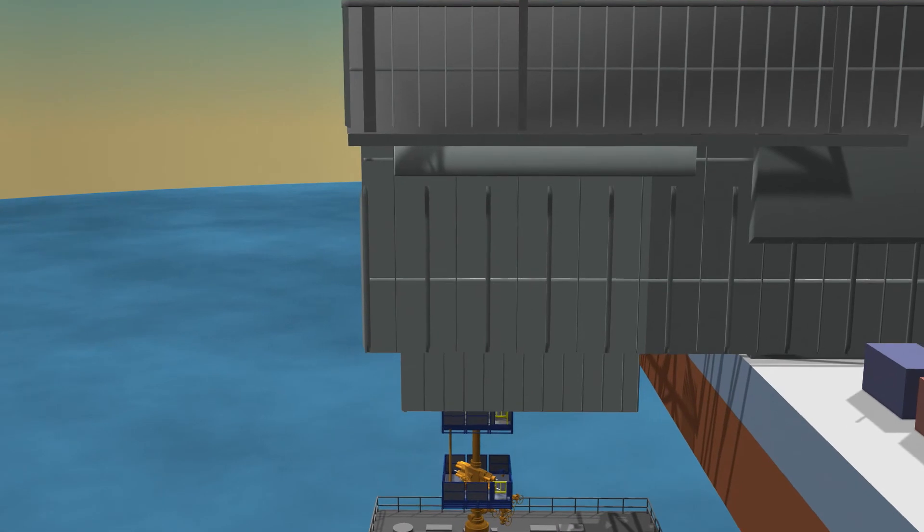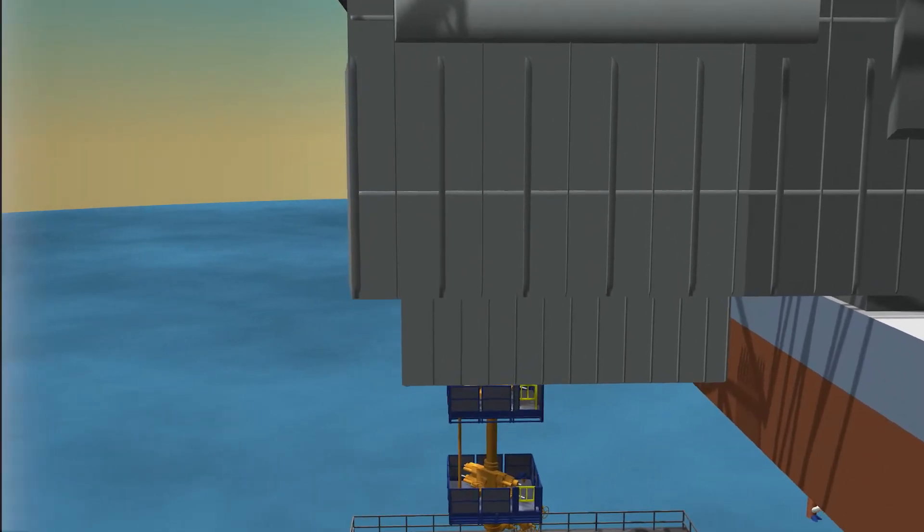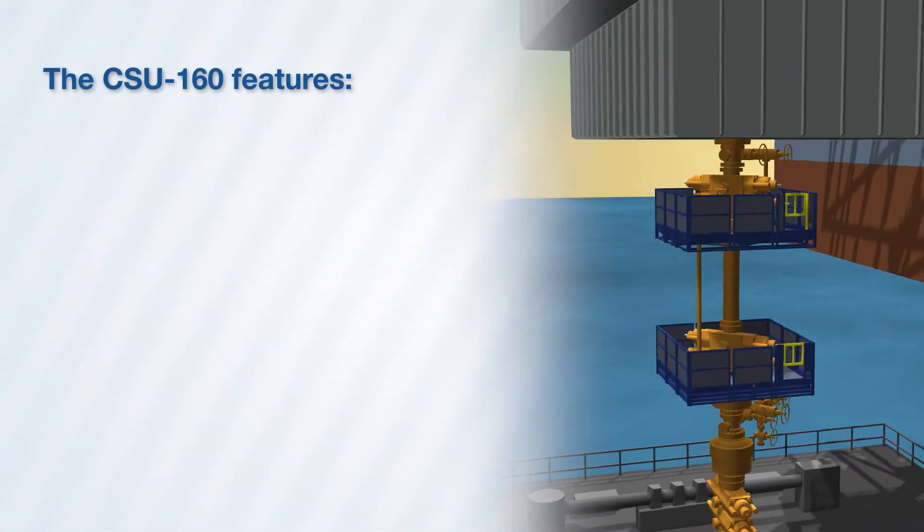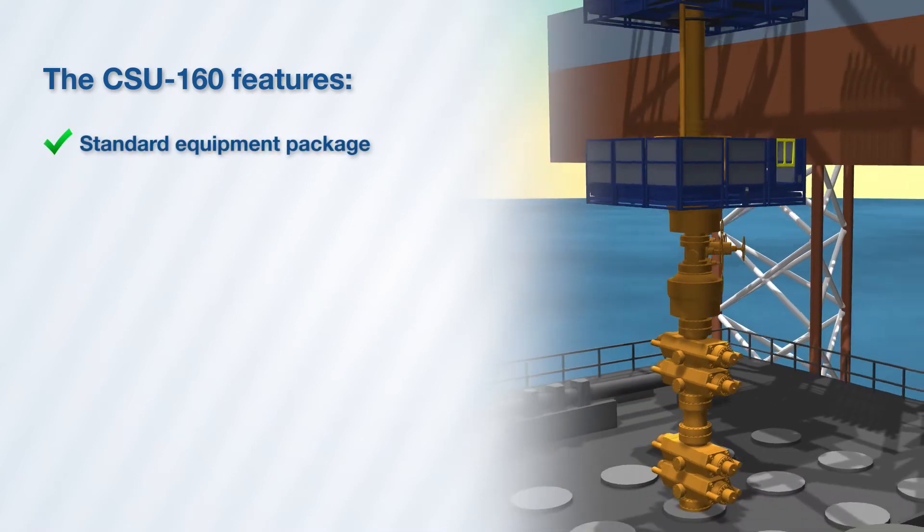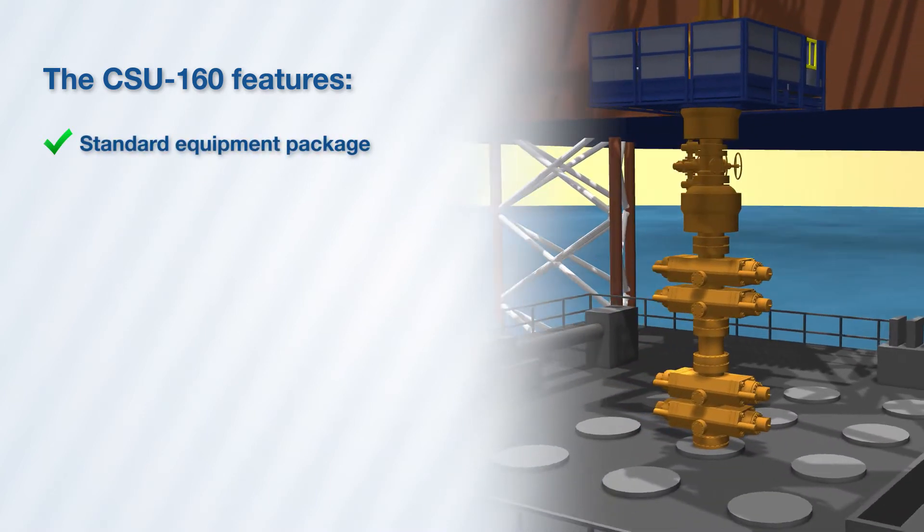To summarize, the CSU-160 Rig Assist Snubbing Unit comes with the standard equipment package for each jackup drilling under balanced wells.